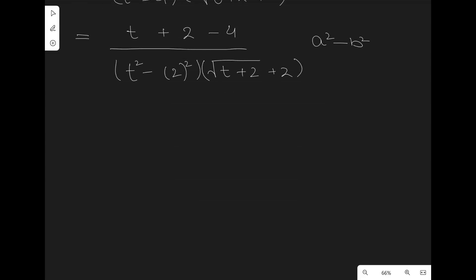Well, you know, a² - b² is always equal to (a-b)(a+b).